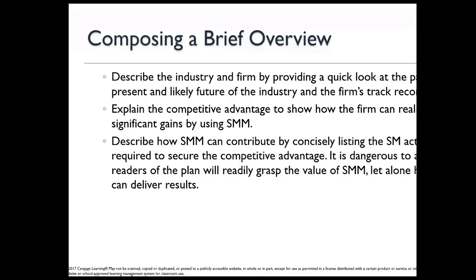The overview covers the industry and the firm's role in it. For example, if you're doing a food truck in Houston or Austin, look at where it was, where it is, and where it's going — that's a paragraph or two. Then talk about your client's competitive advantage: what do they do uniquely that no one else can? It might be the best burrito or garden-fresh ingredients. Remember, you're not marketing the entire organization — you're focusing on a specific element or campaign.